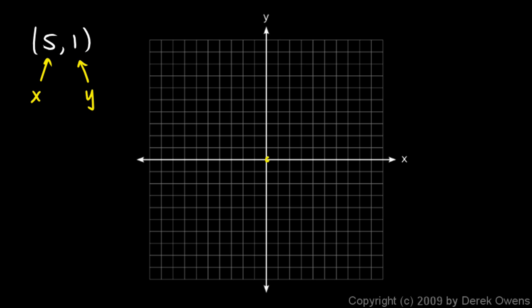So let's start here at the origin and go in the x direction — that's this way — five units. We can just count on the grid here: 1, 2, 3, 4, 5. And then we go in the y direction one unit, so we go up one, and that puts us at this point right here. This point is the point 5, 1.